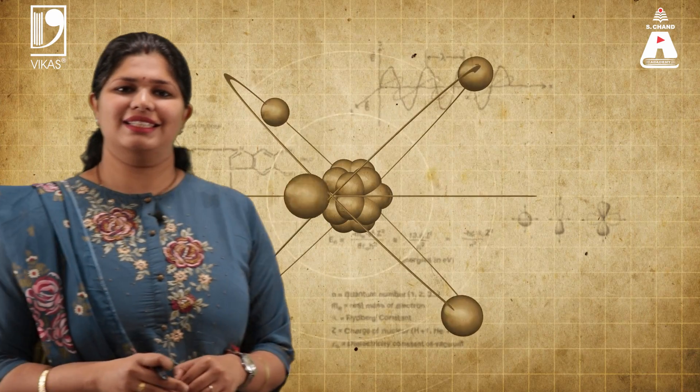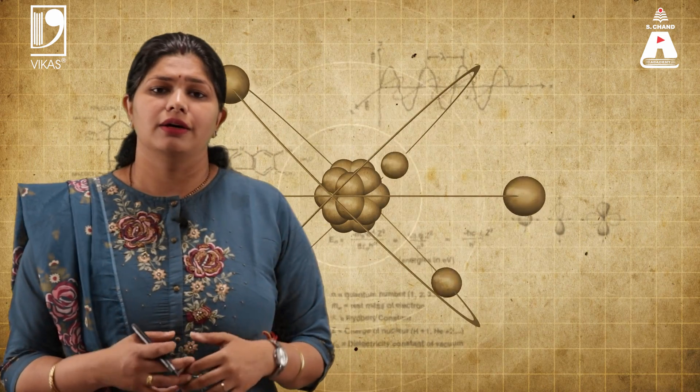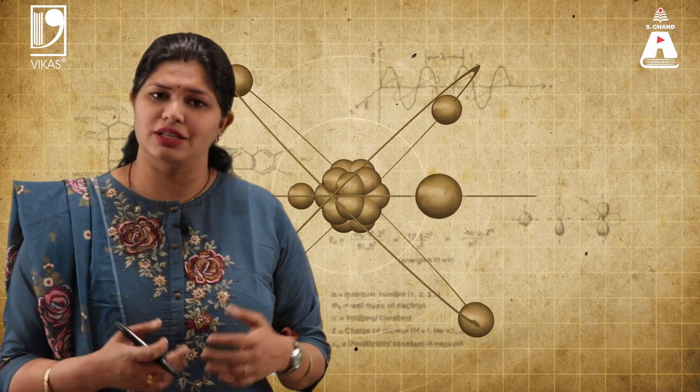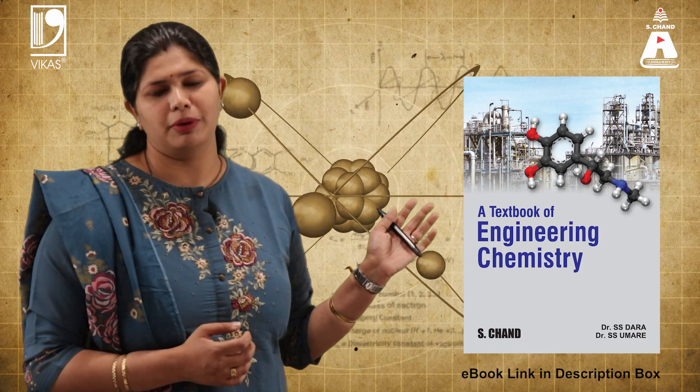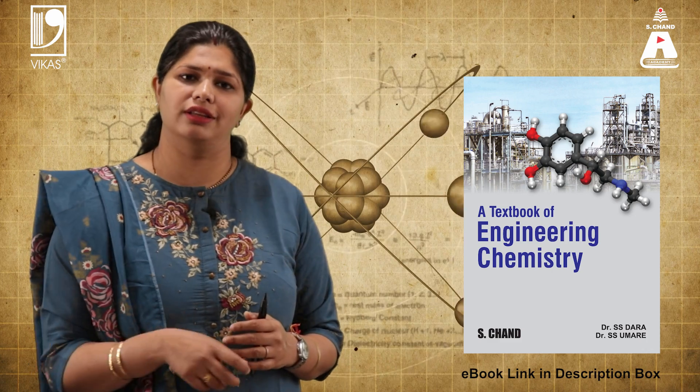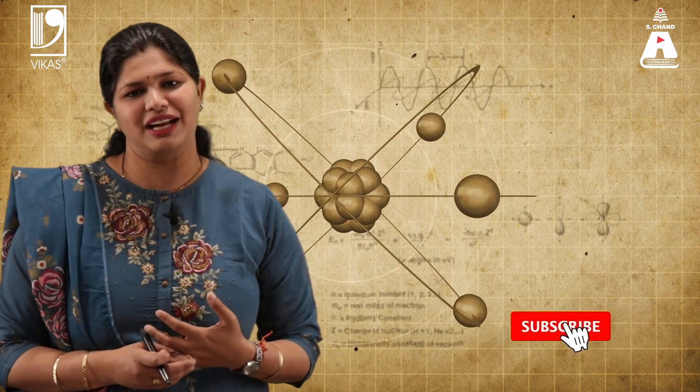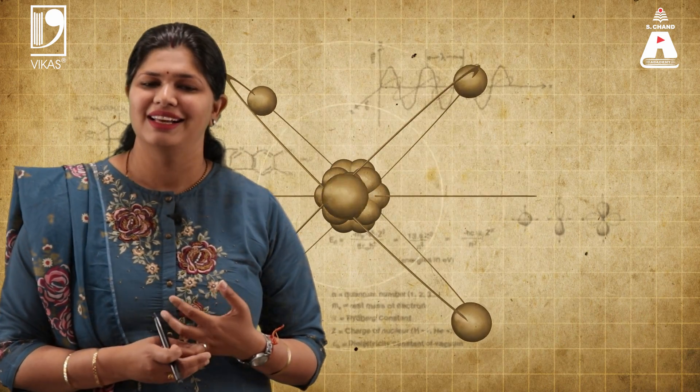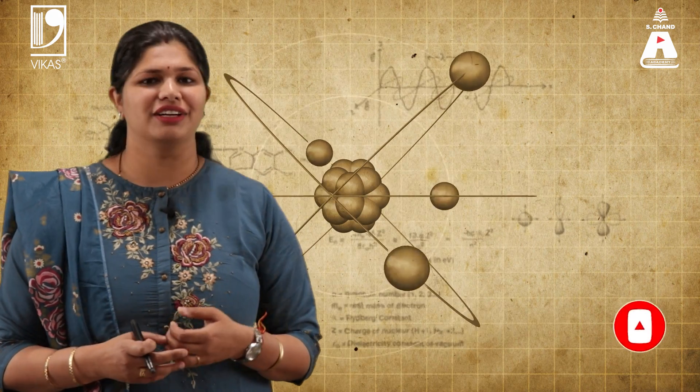In this lecture, we learnt about reduction potential, its various values in the electrochemical series, and how reducing and oxidizing agents can be determined by looking at the electrochemical series. We also learnt about the Nernst equation and its relation of EMF with Gibbs free energy. To know more, refer to the book by S-Chant Publishing — the e-book link is in the description box. If you found this video interesting, please like, share, and subscribe to the S-Chant Academy channel, and press the bell icon for future updates.